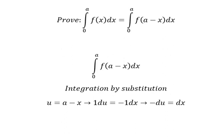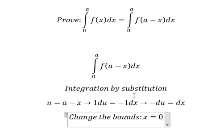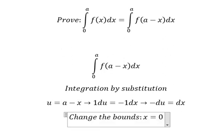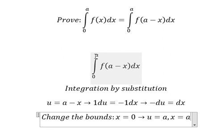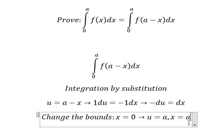Next, we need to change the bounds. When x equals to 0, we put 0 in here, so u equals to a. When x equals to a, so we put a in here, so a minus a, you got 0.